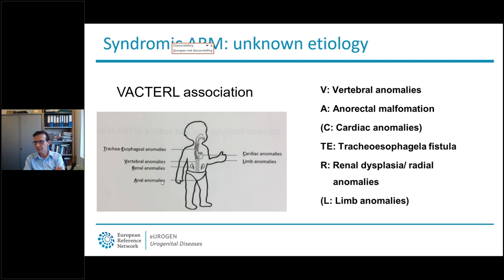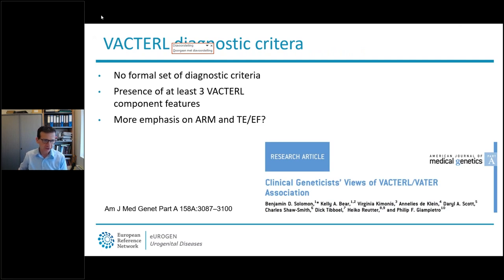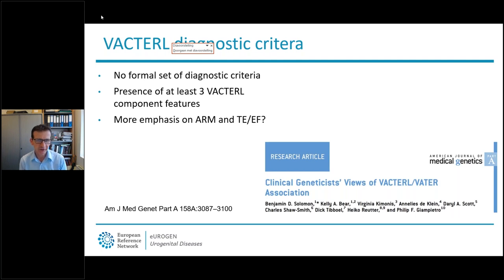I'd like to switch to another very important differential diagnosis in patients with anorectal malformation: the VACTERL association. This holds the classical combination of vertebral anomalies, anorectal malformation, cardiac anomalies, esophageal anomalies, and renal dysplasia and limb abnormalities. Usually this diagnosis is made when at least three of the component features are present, and many clinicians think that either ARM or esophageal atresia should be one of these component features before making this diagnosis.